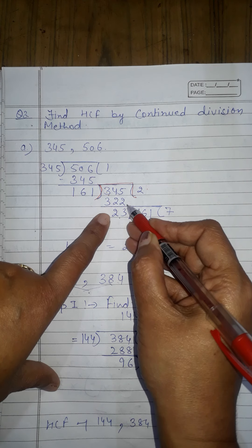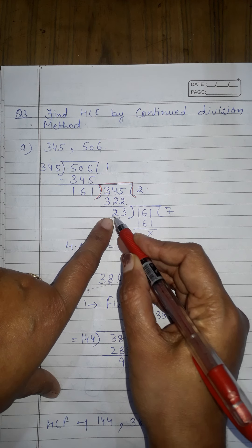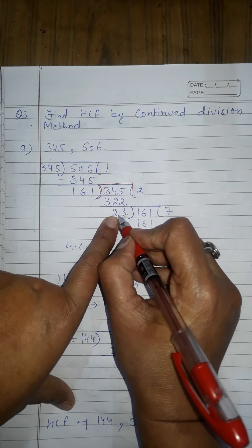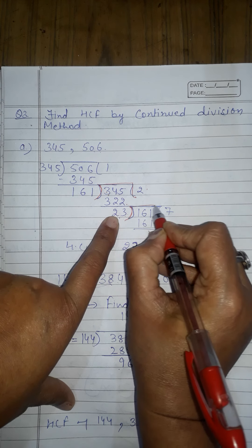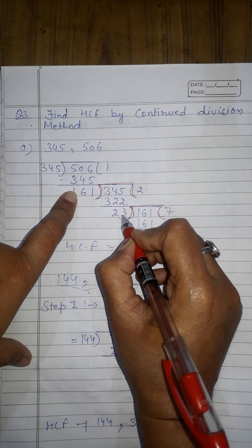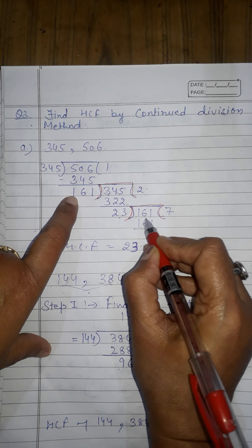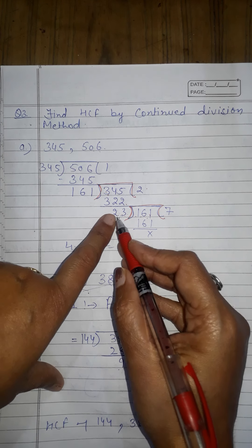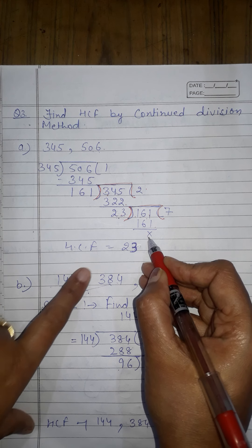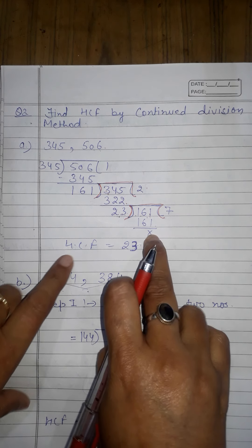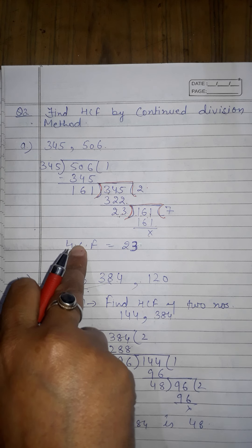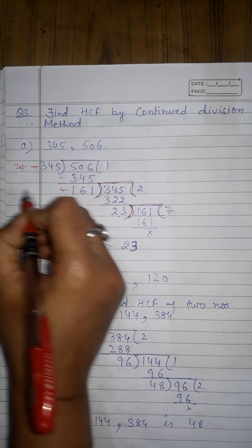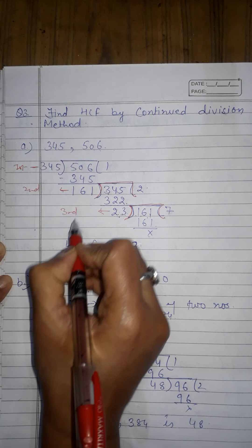Now 161 becomes the divisor and 345 (the previous divisor) becomes the dividend: 161 × 2 = 322, remainder is 23. Still not zero, so we continue. Now 23 becomes the divisor and 161 (previous divisor) becomes the dividend: 23 × 7 = 161, remainder is zero. The process is complete.